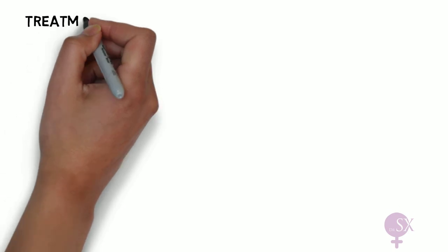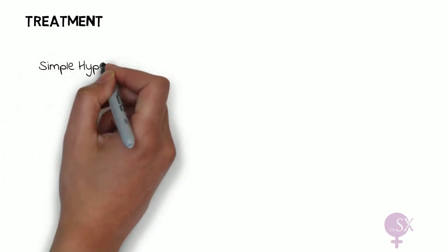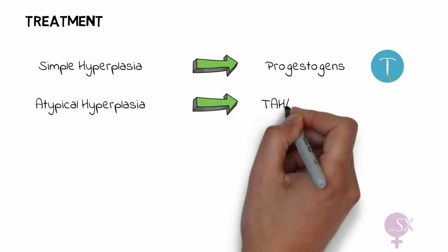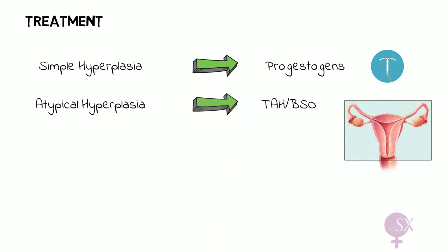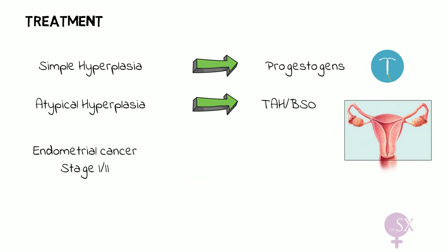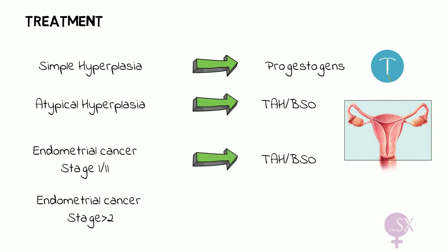Regarding treatment: for simple hyperplasia, we treat with progestogens — either oral progestogen or an intrauterine system such as the levonorgestrel intrauterine system (Mirena). If the endometrial hyperplasia characteristics suggest high risk for malignancy, such as atypical hyperplasia, a hysterectomy is performed. For endometrial cancer in stages 1 or 2, a hysterectomy is performed; if the disease is more advanced, the patient is given radiotherapy.